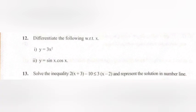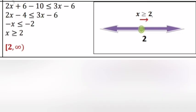Problem 13. Solve the inequality: 2x plus 3 minus 10 less than or equal to 3x minus 2, and represent the solution on a number line. Answer: 2x plus 6 minus 10 less than or equal to 3x minus 6; 2x minus 4 less than or equal to 3x minus 6; minus x less than or equal to minus 2; x greater than or equal to 2, i.e., [2, infinity).